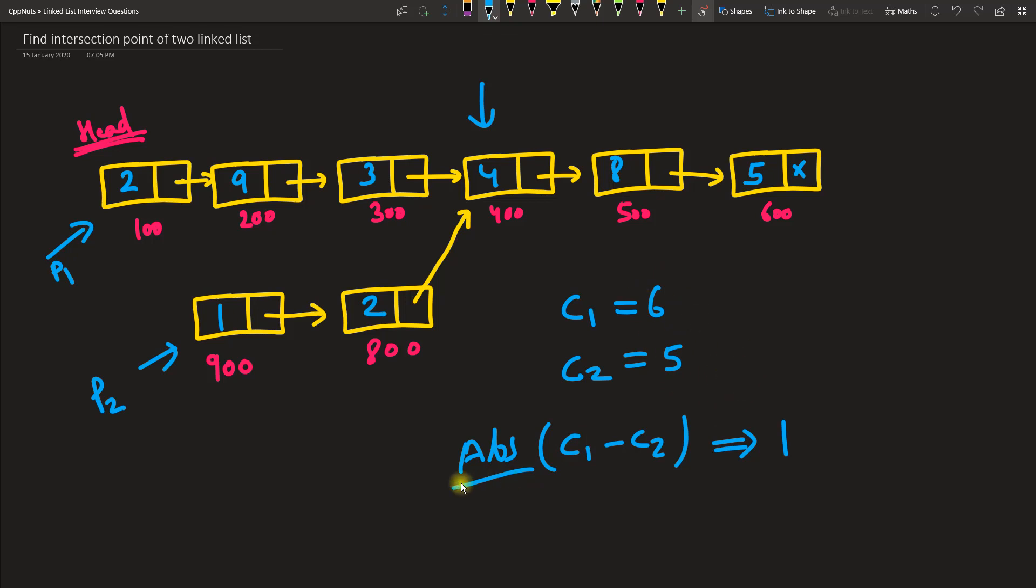Once you get this number, you increment the bigger list pointer that many times. So this p1 will get incremented that many times, so one time means it is pointing to this node now. Ultimately what is happening, both pointers p1 and p2 are pointing to the node from that node to end node, distance is five.